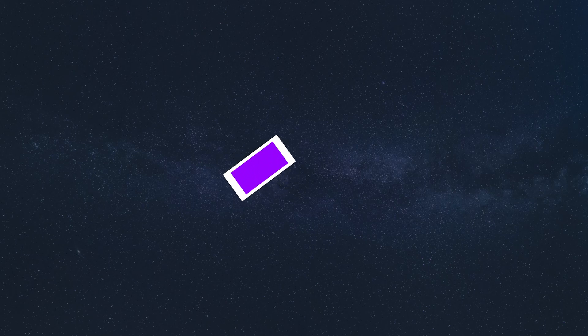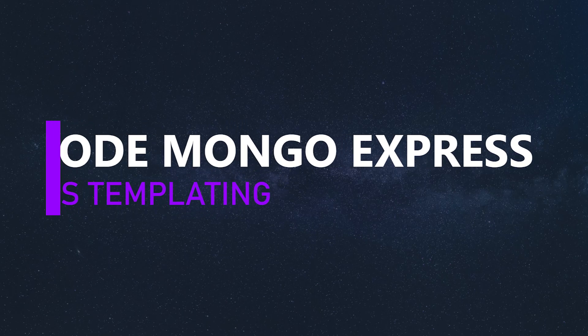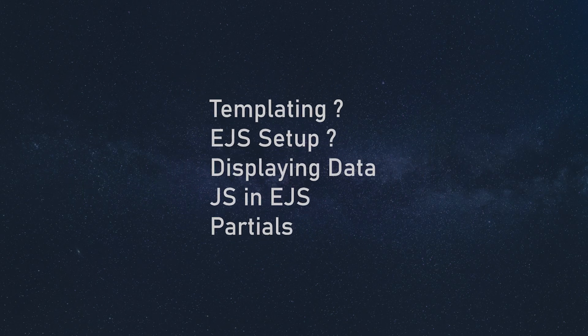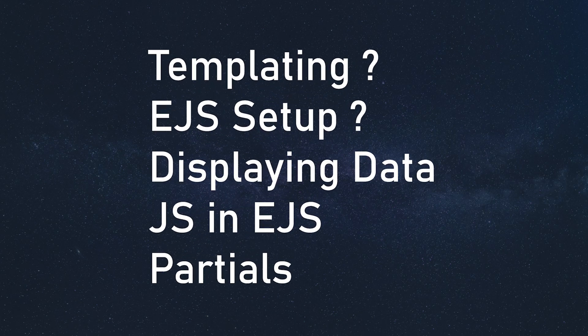Hey everyone, this is Prince from DC Programmer. Welcome back to another exciting video in the Node.js MongoDB Express series. In this video we are going to talk about EJS, which is a templating engine in Node.js — what it is, how to use it, how to send data from the server to the user, and how to optimize our code for EJS.